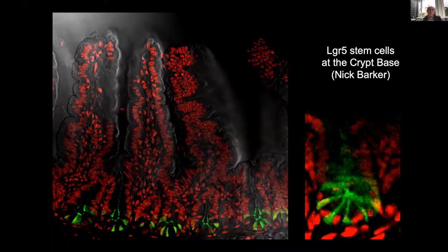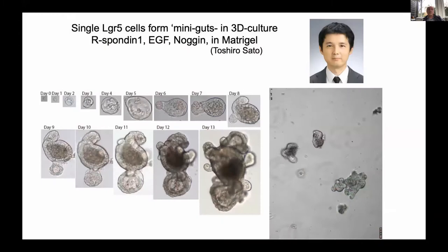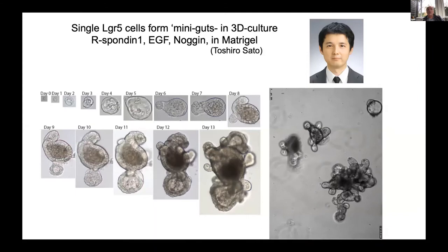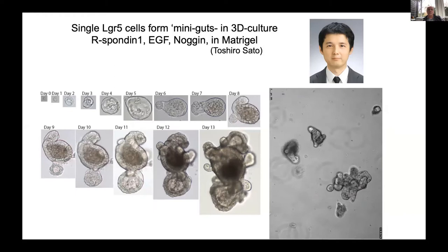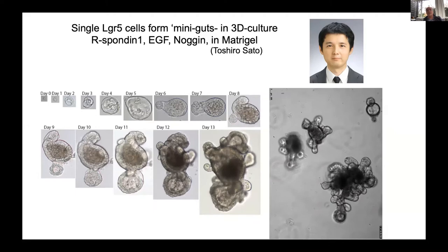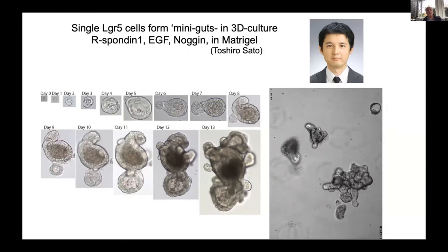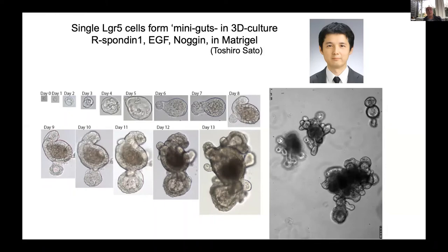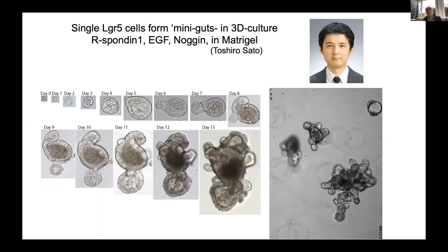Nick Barker in my lab, after we found that Wnt drives the cancers of this organ and also drives its stem cells, went on to identify Wnt target genes. One of them was LGR5, and they made knock-in mice — a GFP-CREER mouse in the LGR5 locus. We now saw these tiny cells sitting between the much larger Paneth cells. With lineage tracing, we showed they really are the long-term stem cells. One surprising observation: these cells constantly divide, going through a cell cycle every 23 hours — about 1,000 consecutive cell divisions in a mouse lifespan.